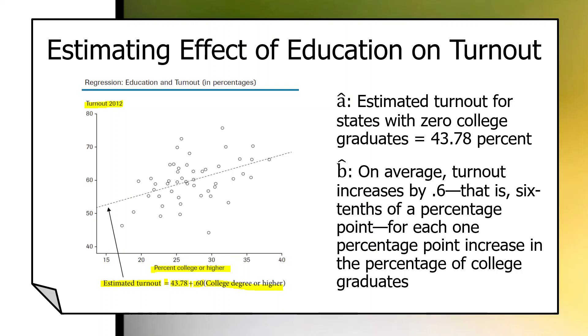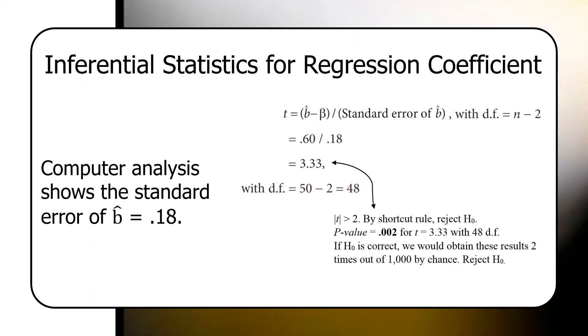All right, here's some statistics for this problem we're looking at. The computer tells us that the standard error for b-hat, for the regression coefficient is .18. Now, what does this mean? This means, by shortcut rule, you can look at the regression coefficient here as .60. And you can do a calculation and say,